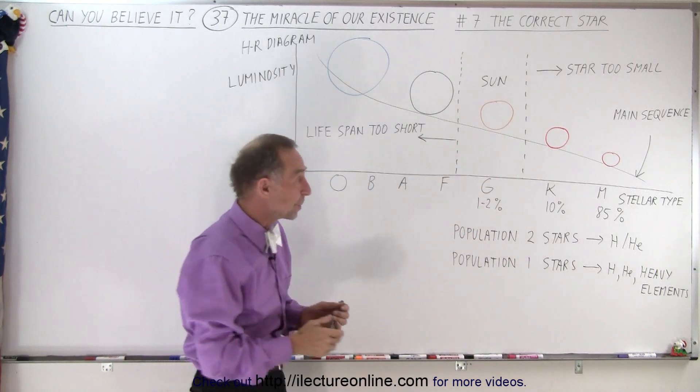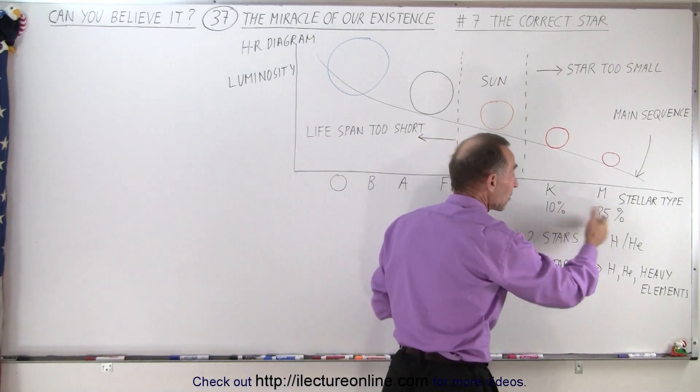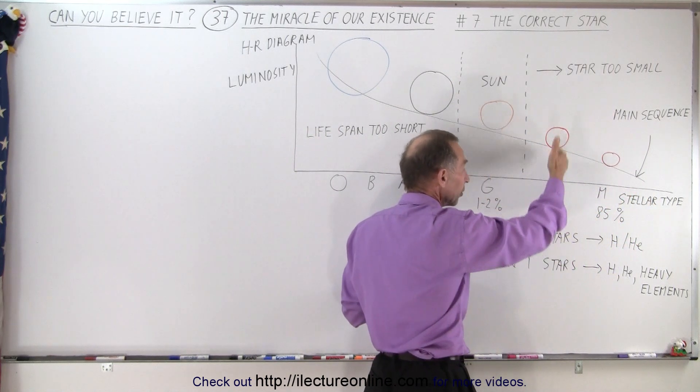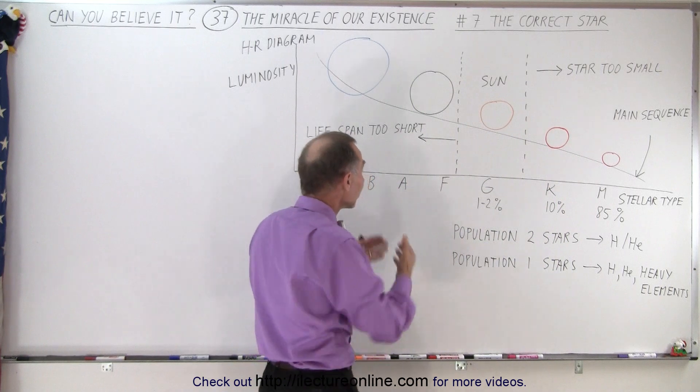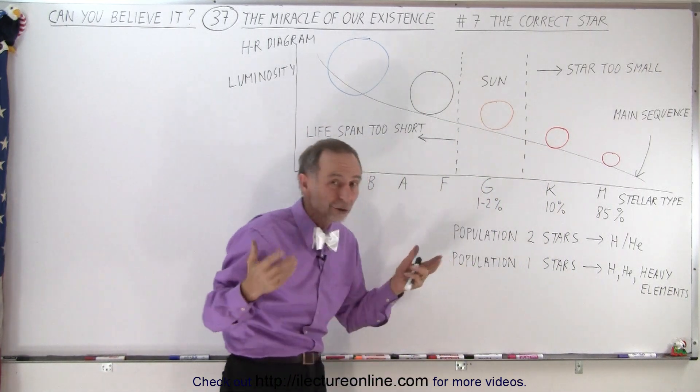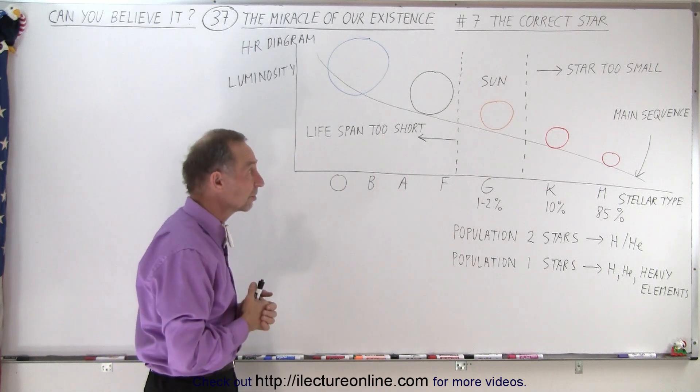And by far, red stars make up 85% of all the stars in the galaxy and in the universe. The orange stars make up another 10%, and then the 5% is all the other stars with Sun-like stars being about 1 to 2% of all the stars in the galaxy.